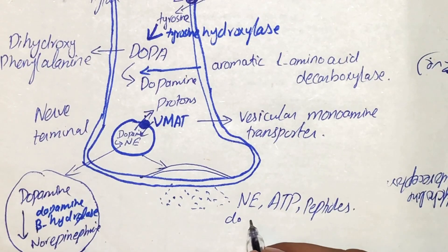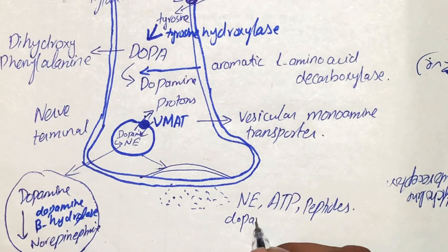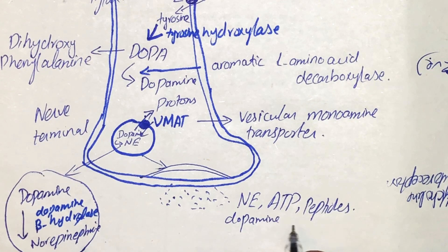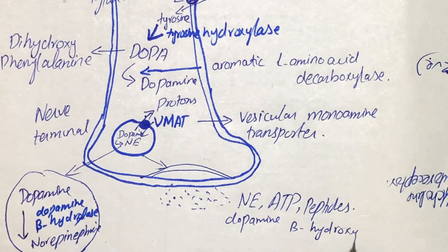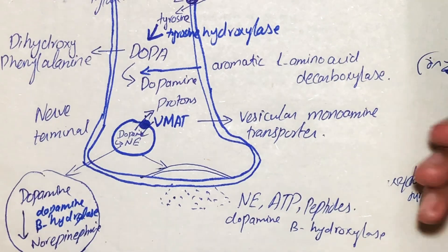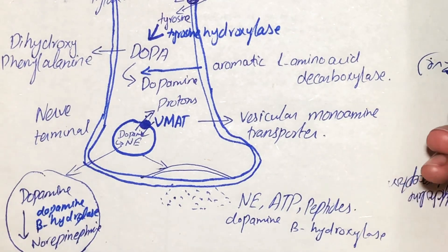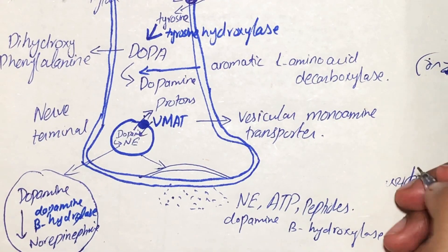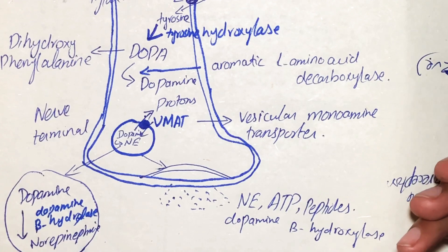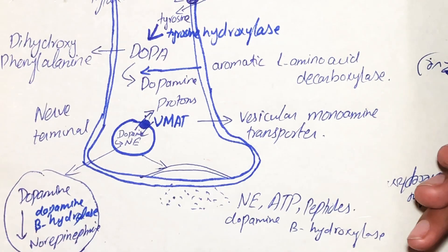The primary neurotransmitter released is norepinephrine, while other substances such as ATP, peptides, and dopamine beta-hydroxylase — the enzyme that causes the formation of norepinephrine — are also present in the synaptic cleft after the fusion of the synaptic vesicle with the presynaptic membrane.